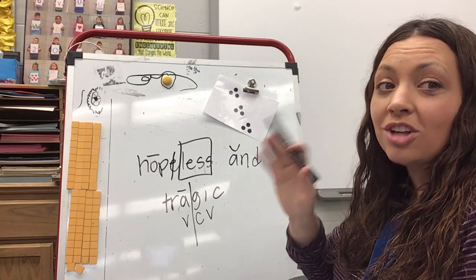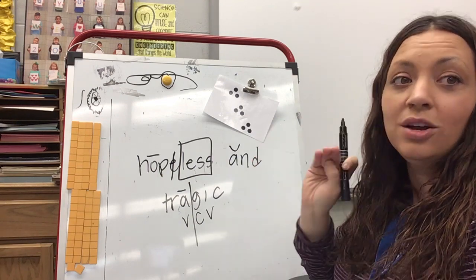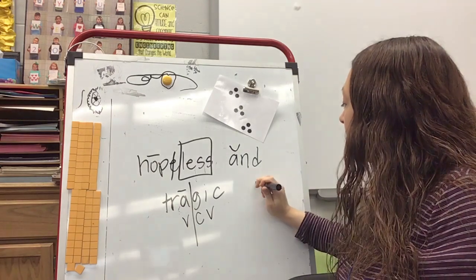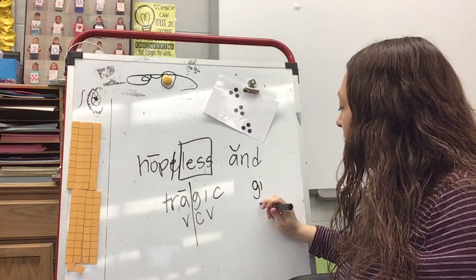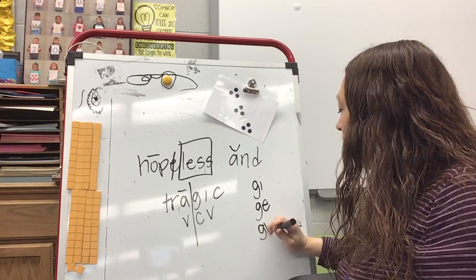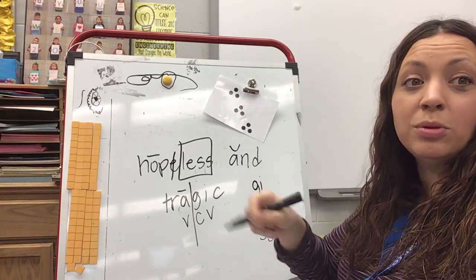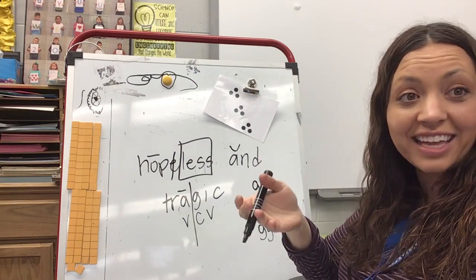Remember how we have soft C, sedilacy? We have a soft G, too. And our soft G is when G is by G-I, G-E, or G-Y, just like the C. It makes that soft G sound, which is actually the J sound, like a J.